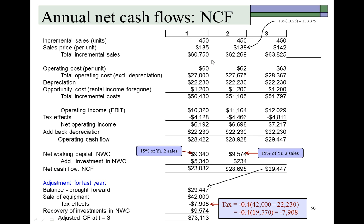The annual net cash flows are the key calculation. The incremental sales projection is 450 units per year. The sales price per unit starts at $135 and grows by the 2.5% inflation rate each year, giving $138.375 in year two and approximately $142 per unit in year three. Multiplying units by price per unit gives the total incremental sales for years one, two, and three respectively.